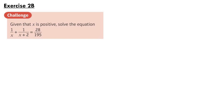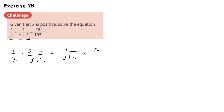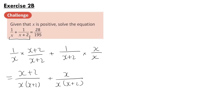One way we can do this question is to first put the left-hand side over a common denominator, so that would be x(x+2). So we get x+2 over x(x+2) plus x over x(x+2), and so we get 2x+2 over x(x+2), and that is equal to 28 over 195.